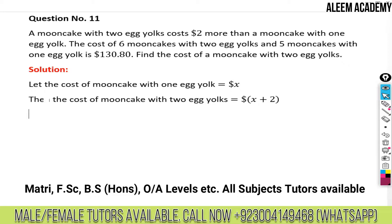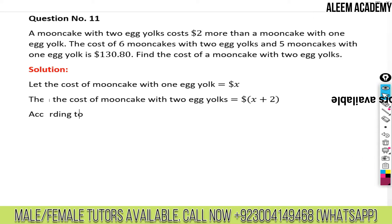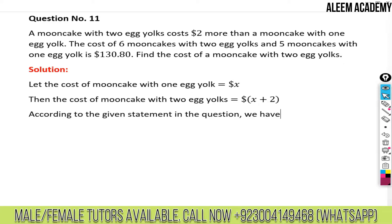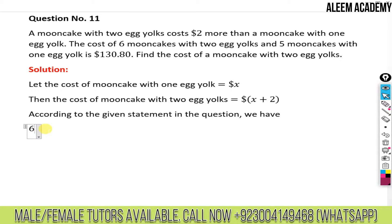Now we follow the statement given in the question. The cost of six mooncakes with two egg yolks: one mooncake with two egg yolks costs x plus two, so six mooncakes with two egg yolks will cost six multiplied by (x plus two).